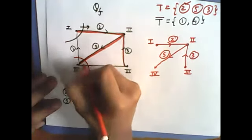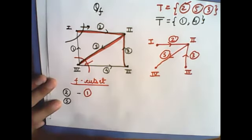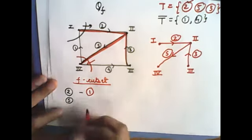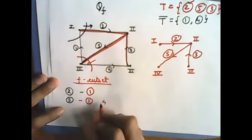Direction kya hoga? Because 5 hai, so 5 wale direction hoga from out to in, so it would have 1 with a negative sign and 4 also with a negative sign.